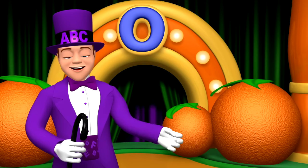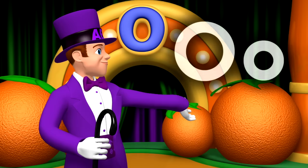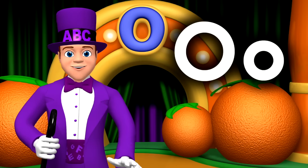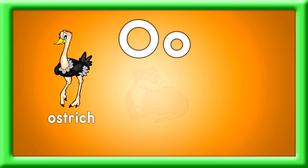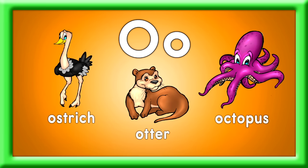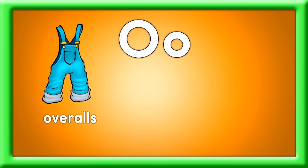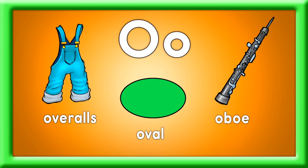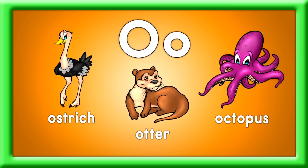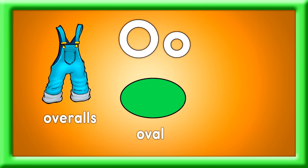Oh my! It's time for O! Look at the capital O and the lowercase o. Sing O words, then drum with us. Ostrich, otter, octopus. More O words that you should know: overalls, oval, and oboe. Ostrich, otter, octopus. Overalls, oval, and oboe.